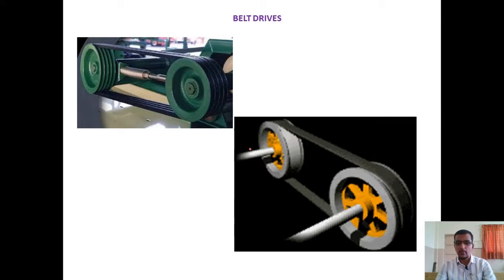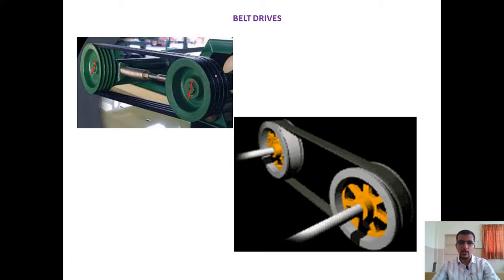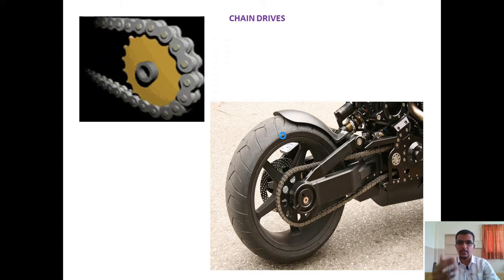Belt drives are power transmission mechanisms. We have a pulley — one called the input pulley and another the output pulley. The input pulley can be rotated by a motor, and both pulleys are connected by a belt. The pulley and belt are in contact because of friction. This is one way to transmit mechanical power from one place to another.